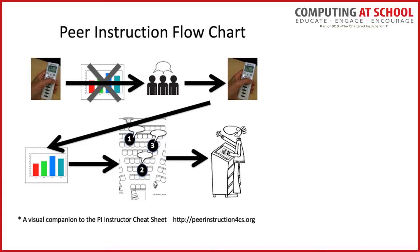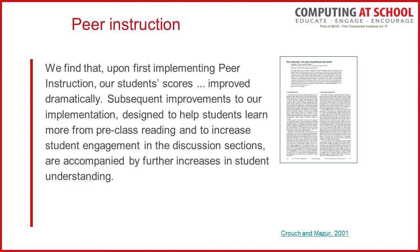In undergraduate computer science education in the States, one methodology is peer instruction: put the question on the board, get individuals to think about the answer, but then before showing the stats, get them to talk to their group and agree on an answer together. Then put the statistics on the board, have a conversation with the room as a whole, before answering the question again and moving on. Universities doing this in the States see very positive results of using questions as a basis for instruction, even in large cohort lectures.